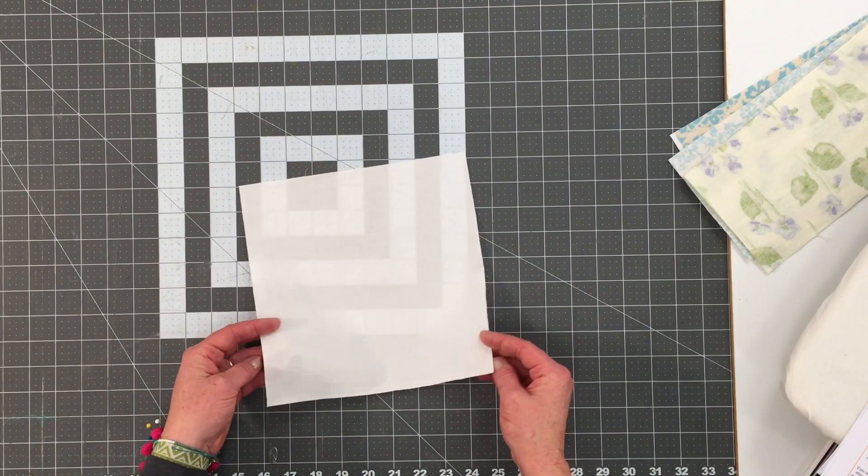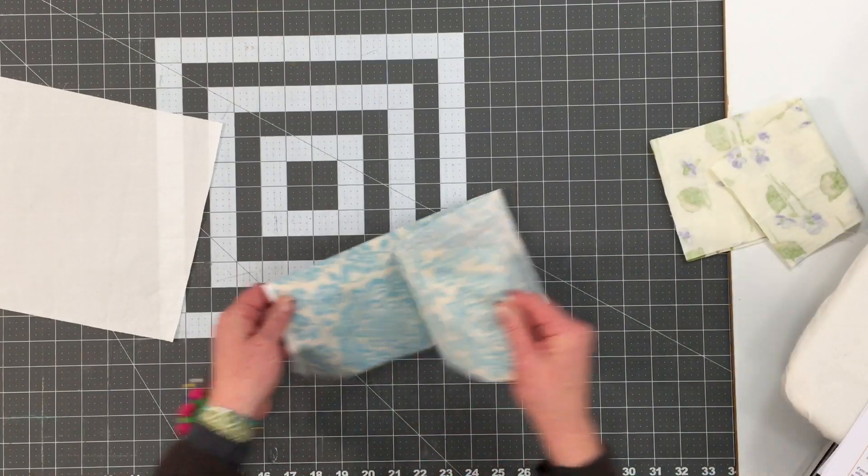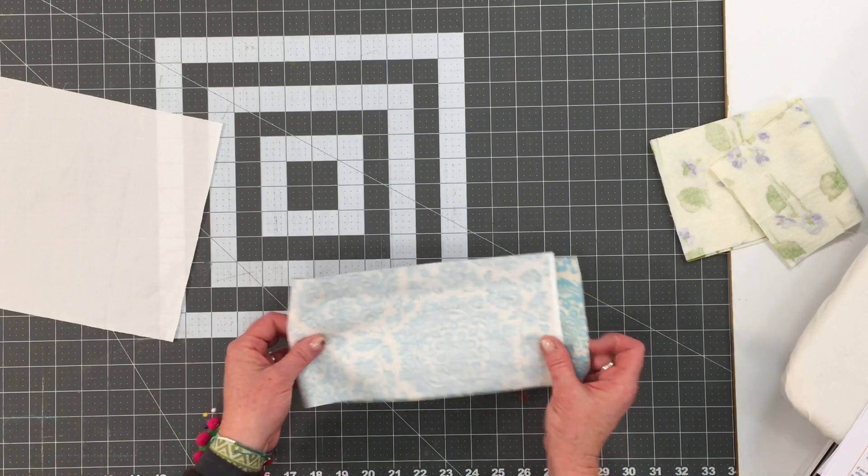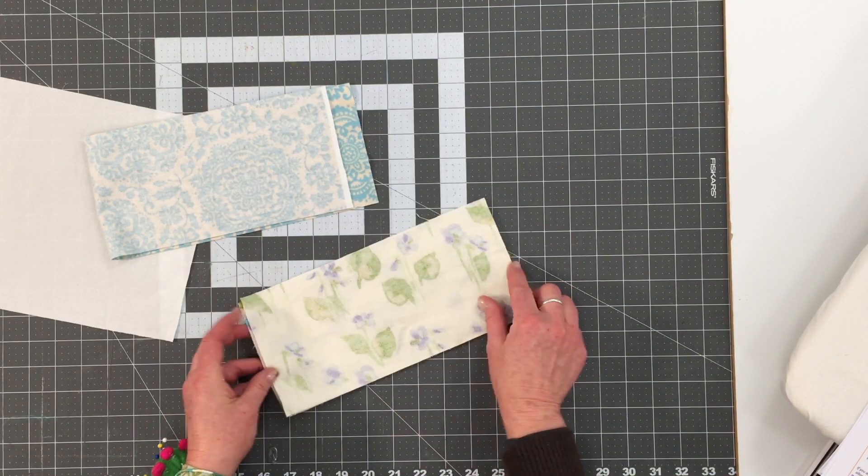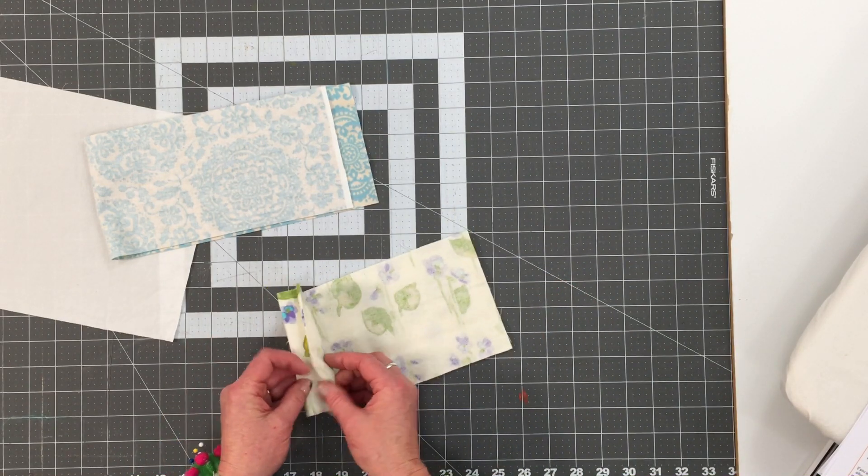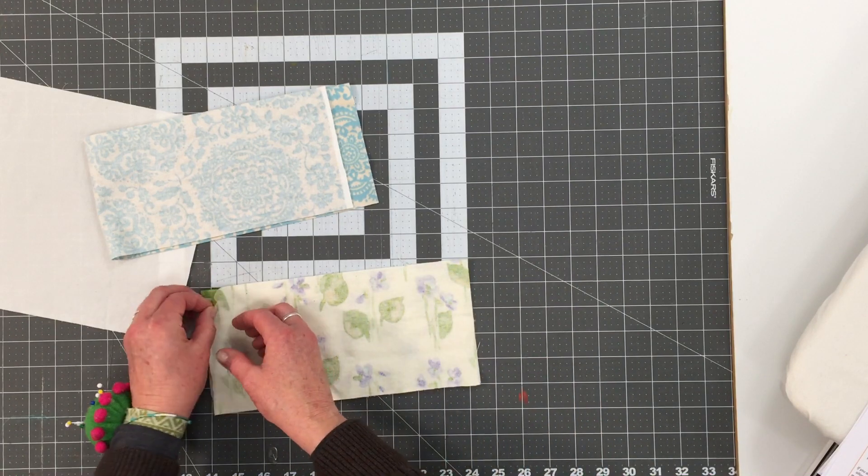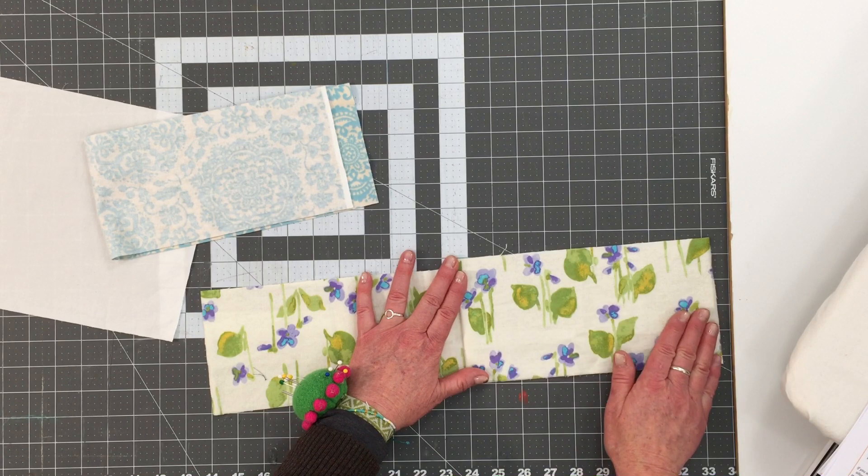So I've cut out the inner bag nine by nine inches and the outer bag twenty and a half inches by five inches. If you don't have a piece long enough, you can put two pieces together five by ten and a quarter inches and just sew down this seam and then open it up and you'll have a piece big enough.